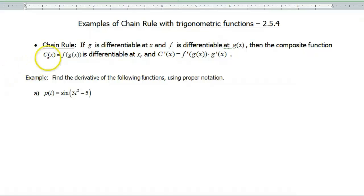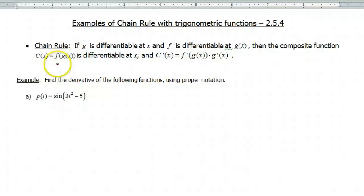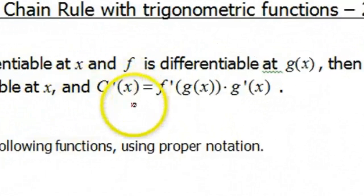The chain rule is used when you have a composition or composite function where f is your outside function and g is your inside function. When you take the derivative of that composite, you take your inside function and plug it into the derivative of the outside, then multiply that by the derivative of your inside function.